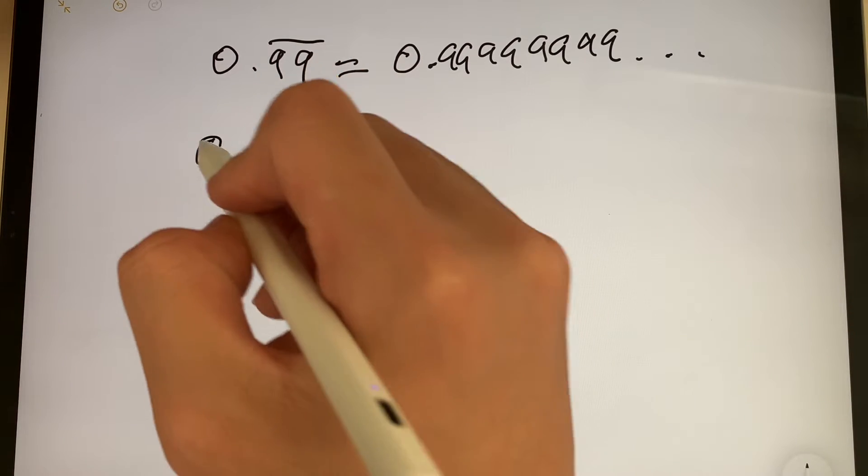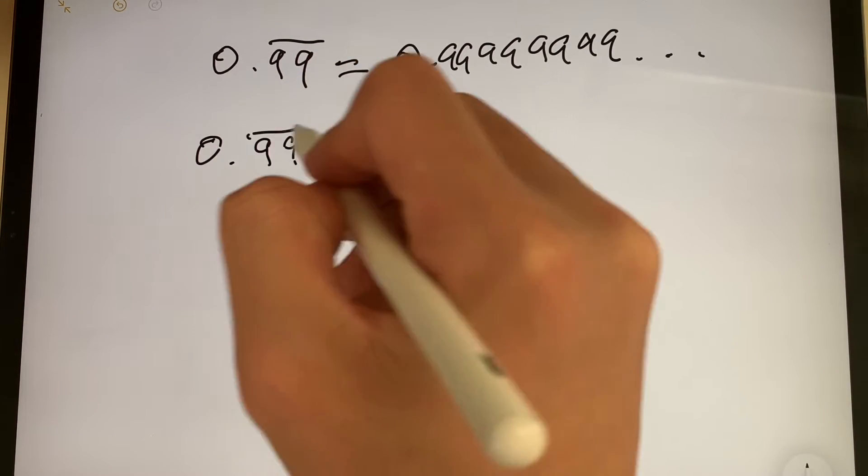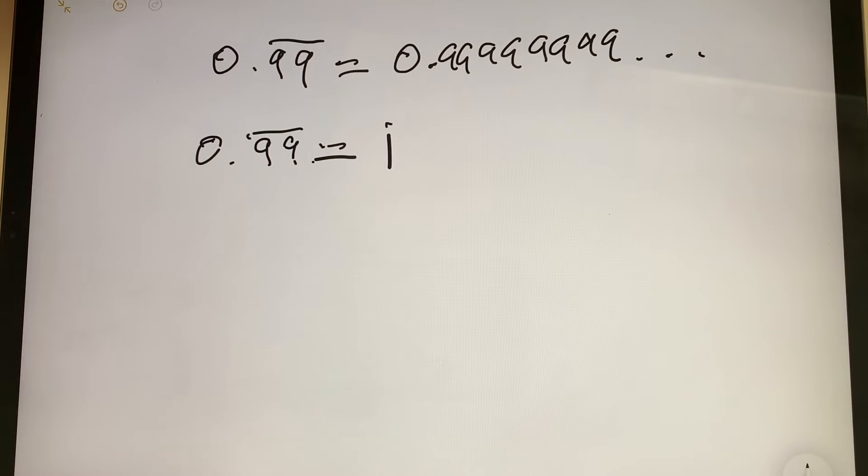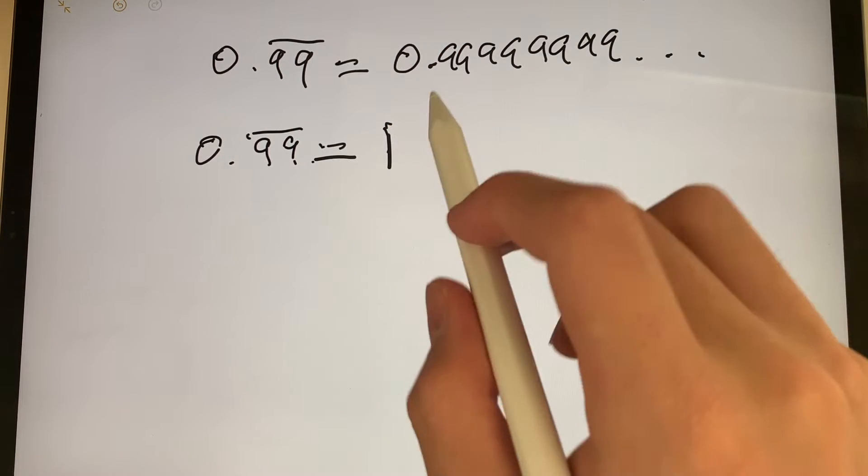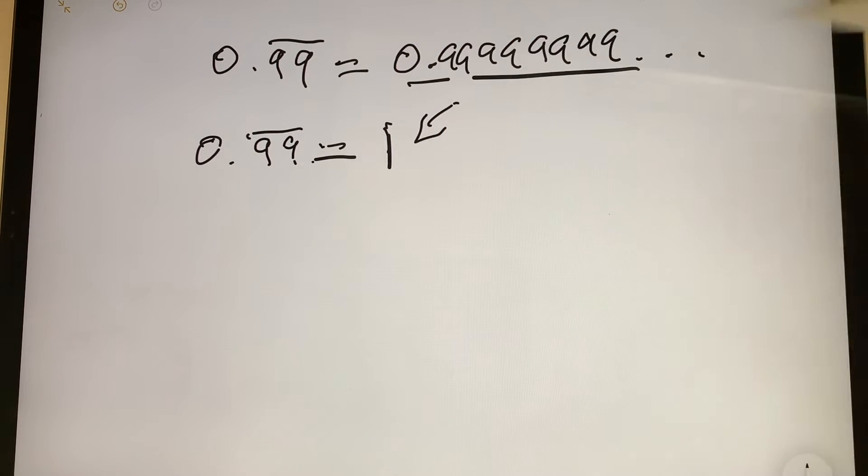Well, what's special about this number? Because I'm going to prove that 0.99 repeated is equal to 1. Oh, that should be a 1. Okay, so that's weird, right? Because how does this number right here equal 1?